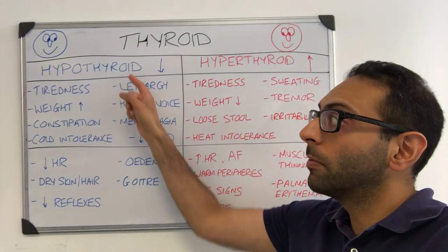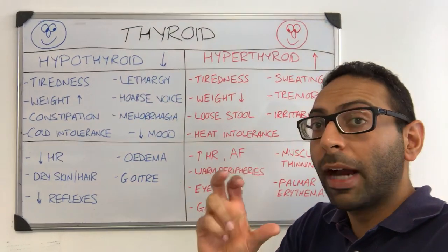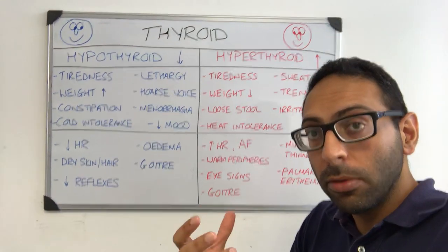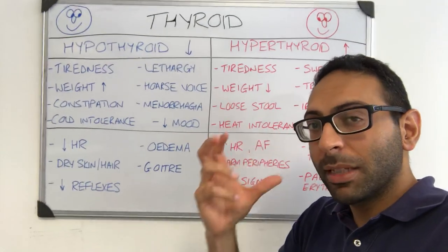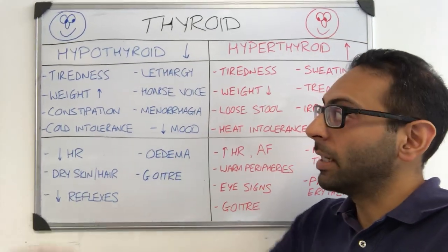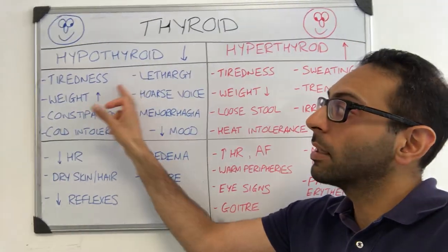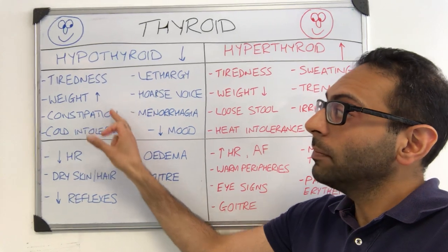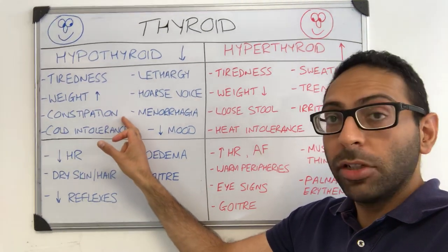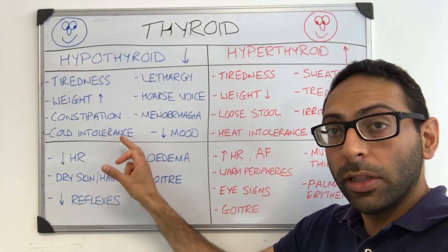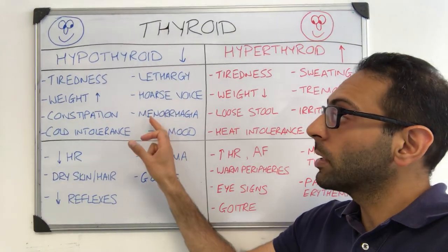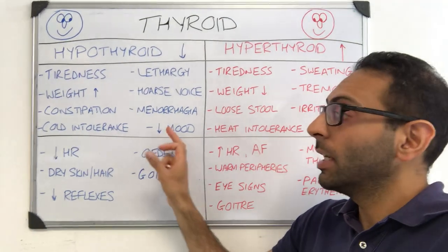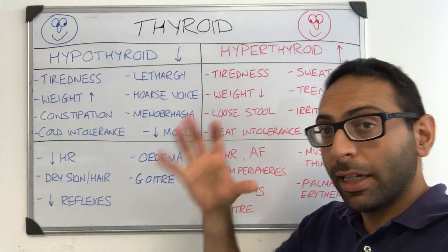Look at hypothyroid first — underactive. Think of cold, think of slow, and think of some of the symptoms that may associate. So tiredness, alongside goes lethargy, weight gain, constipation, cold intolerance, hoarse voice, menorrhagia or period changes, and decreased mood.